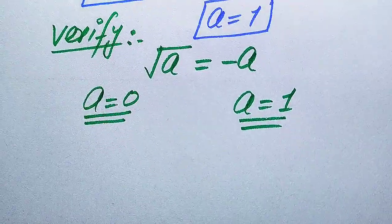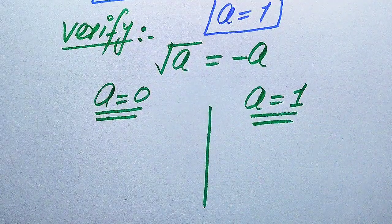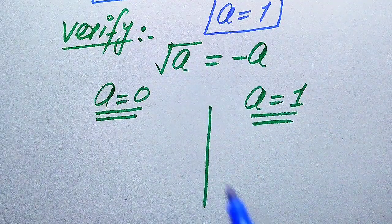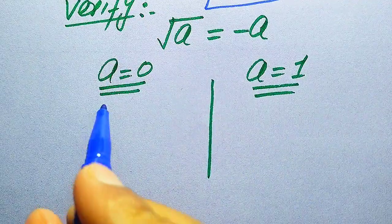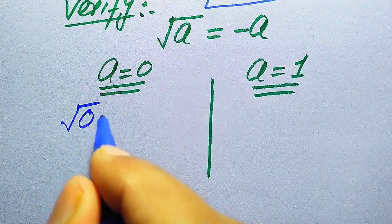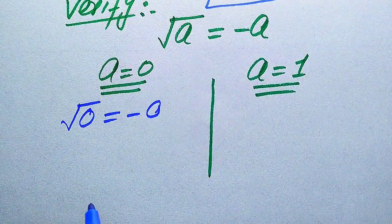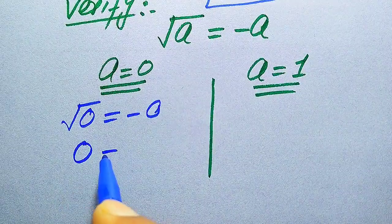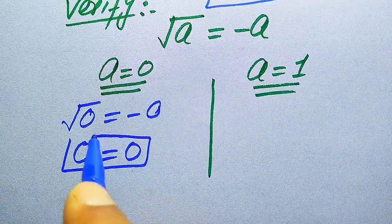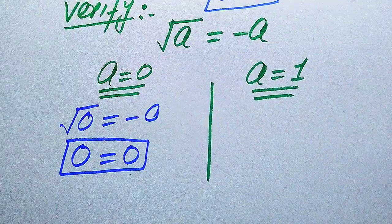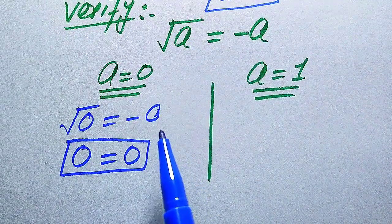First we focus on A equals 0. When we substitute A equals 0 on both sides of this equation it will be written as square root of 0 equals minus times 0. We know that square root of 0 equals 0, so both sides are equal.